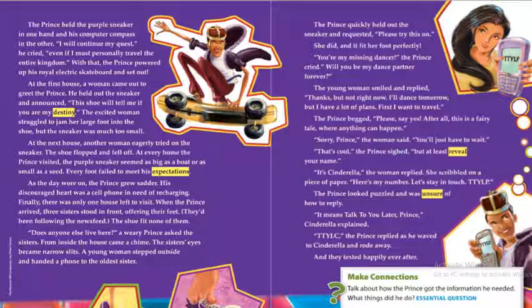The prince held the purple sneaker in one hand and his computer compass in the other. 'I will continue my quest,' he cried, 'even if I must personally travel the entire kingdom!' With that, the prince powered up his royal electric skateboard and set out. At the first house, a woman came out to greet the prince. He held out the sneaker and announced: 'This shoe will tell me if you are my destiny.' The excited woman struggled to jam her large foot into the shoe, but the sneaker was much too small.